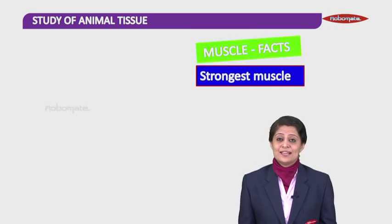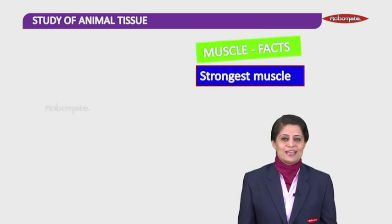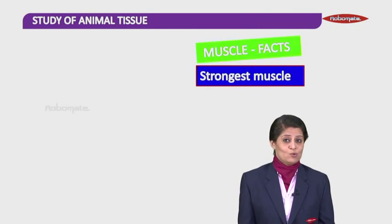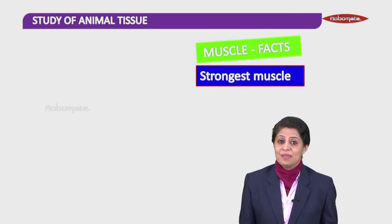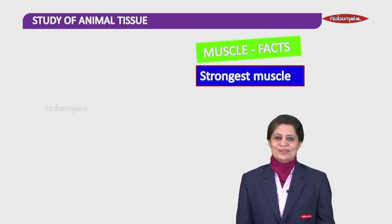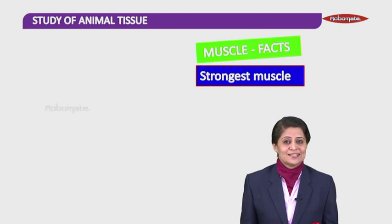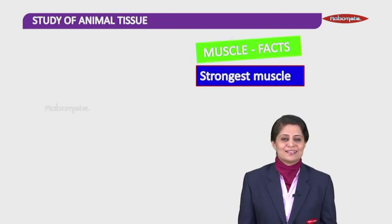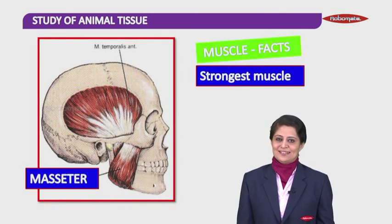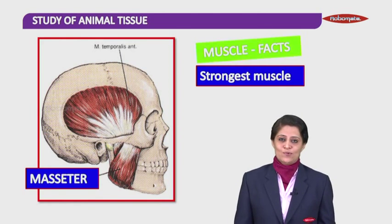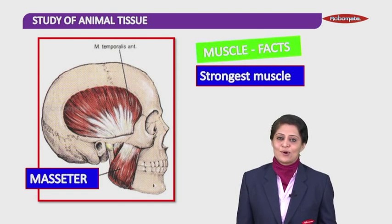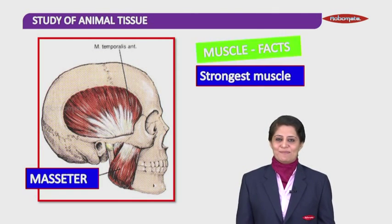Which muscle in your body is the strongest one? Tongue? Biceps? No. The strongest muscle in your body is the muscle present in your lower jaw and it's known as masseter. This is the muscle which helps you chew food and talk. Masseter is the strongest muscle in your body.